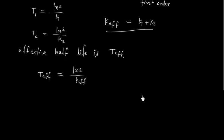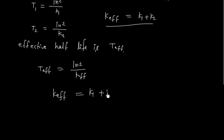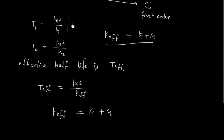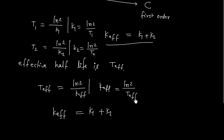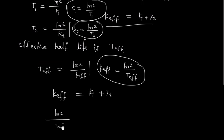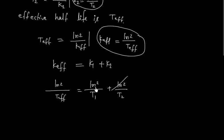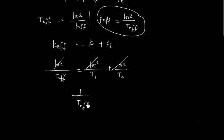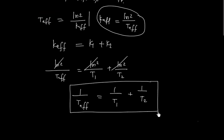Using K_effective equals K1 plus K2, we substitute: K1 equals ln2 / T1, K2 equals ln2 / T2, and K_effective equals ln2 / T_effective. Dividing through by ln2, we obtain the relation: 1 / T_effective equals 1 / T1 plus 1 / T2. This is the relationship between the half-life of the first path, the half-life of the second path, and the effective half-life.